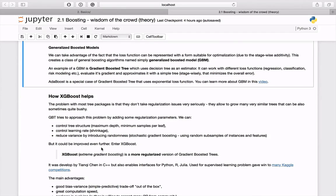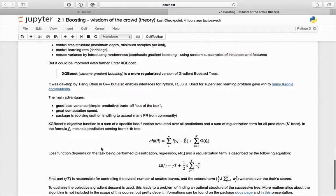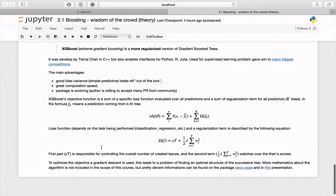But these things can be improved even more. Here XGBoost really helps. XGBoost, which is a short name for extreme gradient boosting, is simply more regularized version of gradient boosted trees. It was developed by Tianqi Chen, first in C++, but later on there were interfaces enabled for Python or Julia.